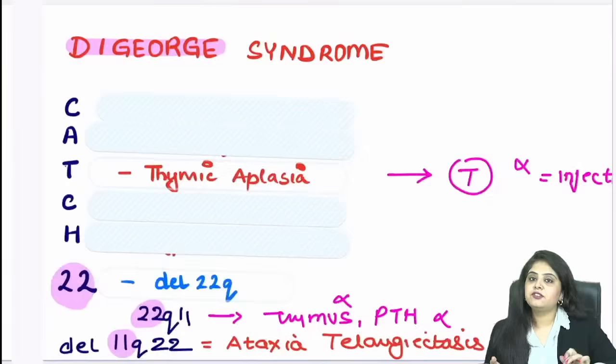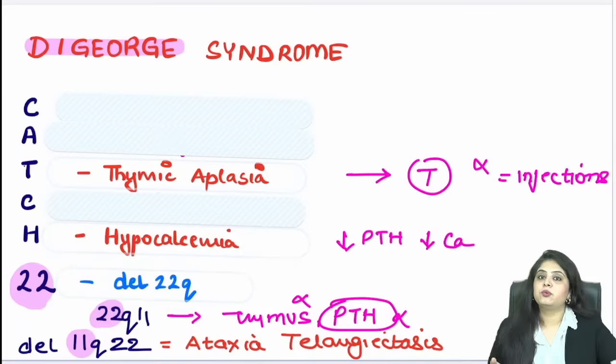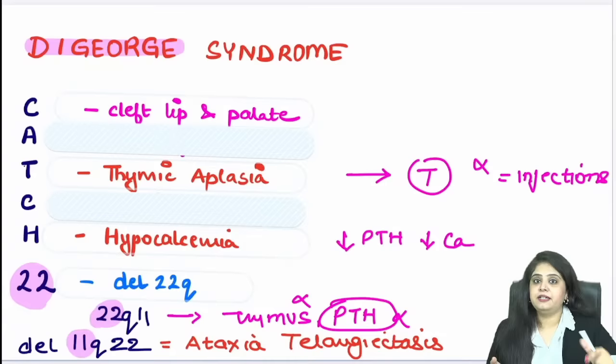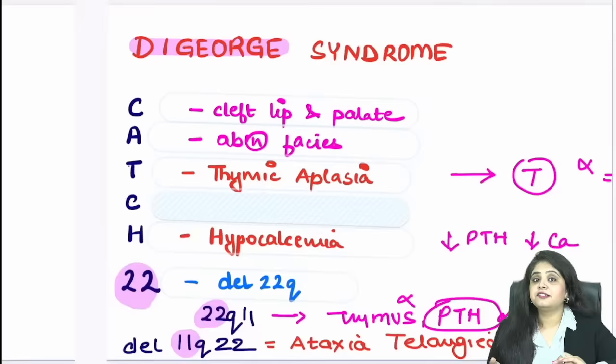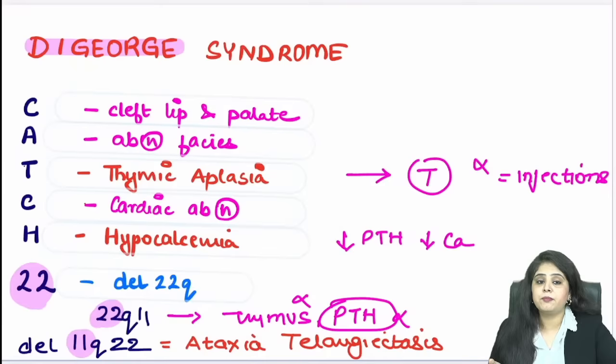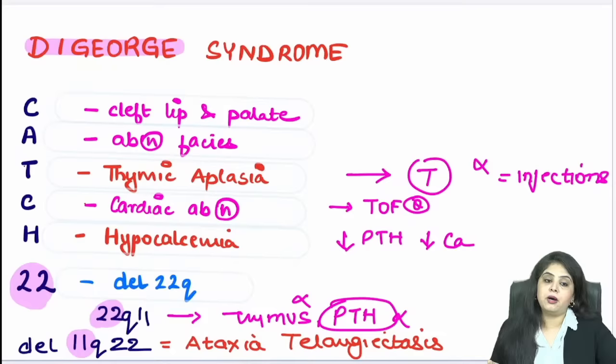The other features: the patient has cleft lip, cleft palate, feeding difficulties, and dysmorphic/abnormal facies — all present in the case. The last feature in CATCH-22 is cardiac abnormalities. Many students ask which cardiac abnormality — there are many — but the one most frequently asked is tetralogy of Fallot. TOF is something they really tend to examine you on. So that is settled.